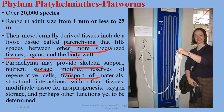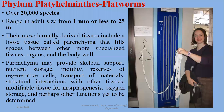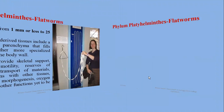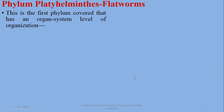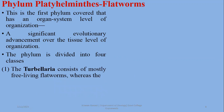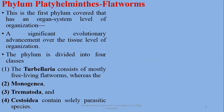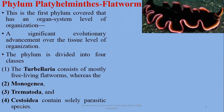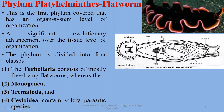Parenchyma fluid also functions in oxygen storage, morphogenesis, and other functions yet to be determined. Phylum Platyhelminthes is the first phylum covered that has an organ system level of organization — a significant evolutionary advancement over the tissue level seen in Cnidaria. We will study four classes: Class Turbellaria, which are free-living flatworms such as Planaria; and the parasitic classes Monogenea, Trematoda, and Cestoda.